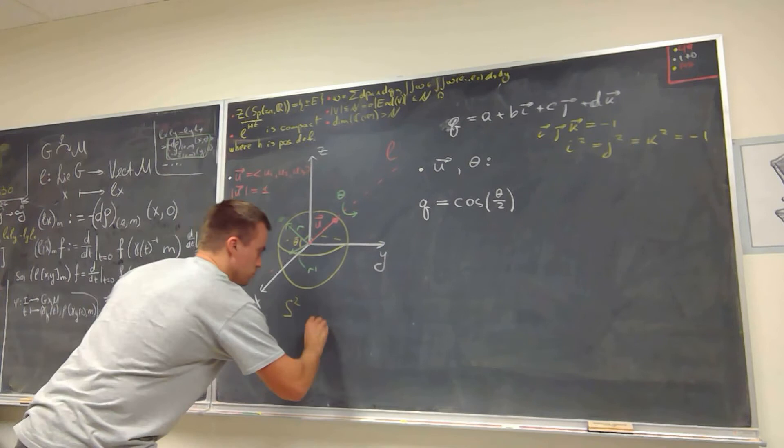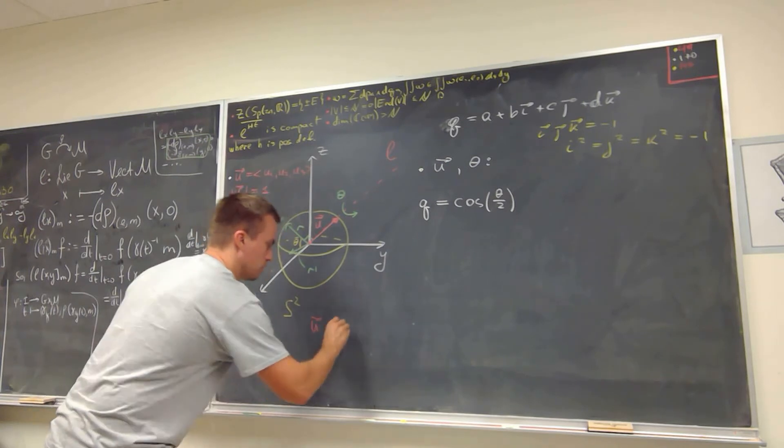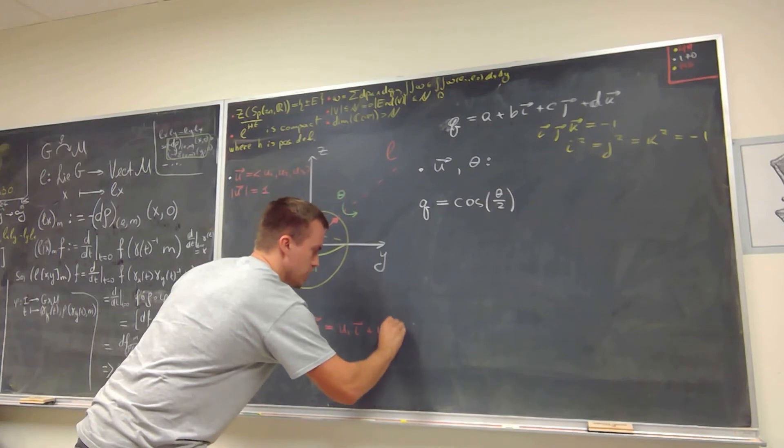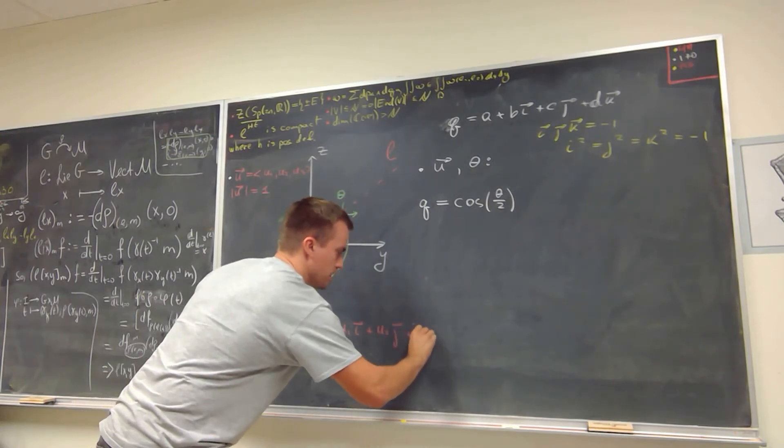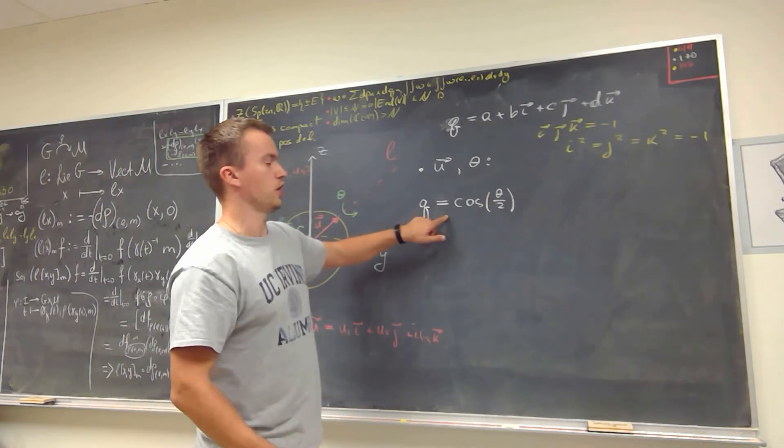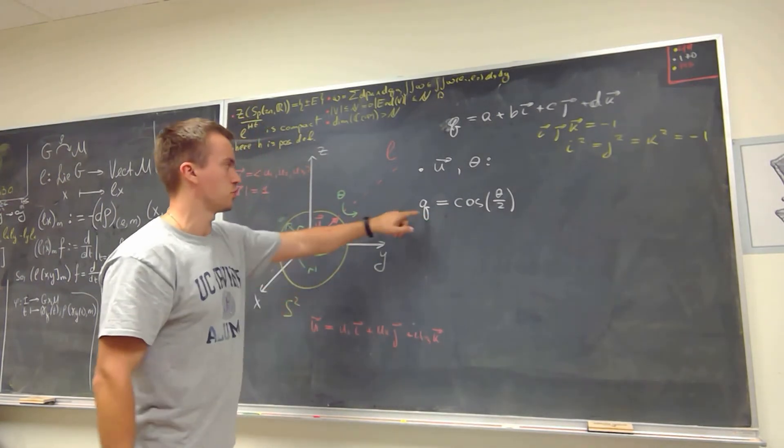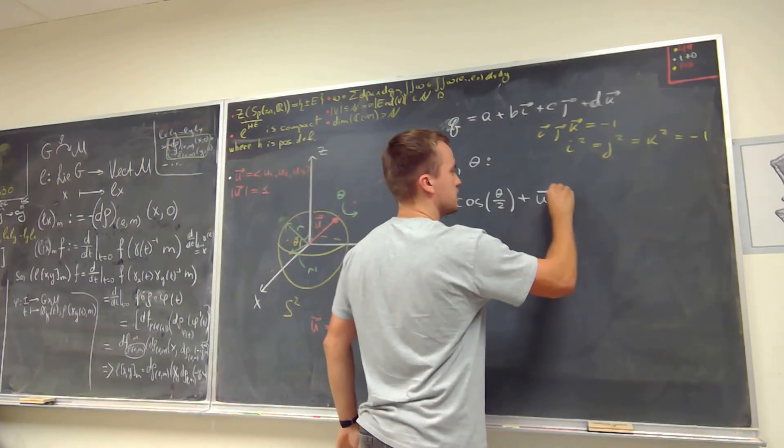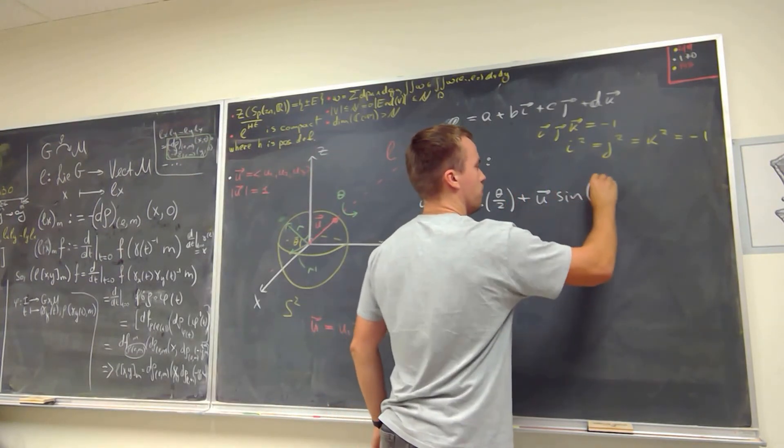Then I will think about u as the imaginary part of my quaternion because I have entries b, c, and d, so I have three components. So that's why I can write my u as a vector u1 i plus u2 j plus u3 k. Then the formula that is going to represent the quaternion for this rotation is going to be equal to u sine of theta over two.